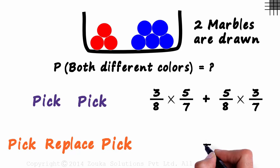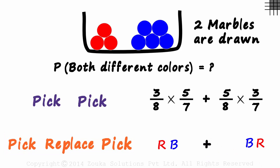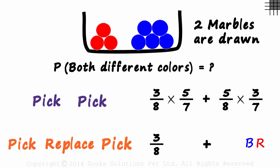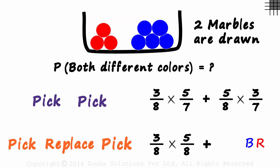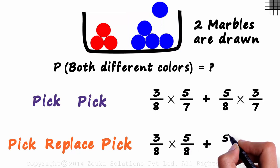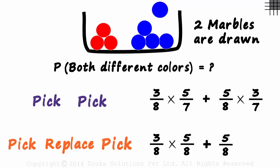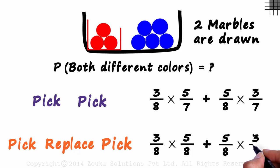For the second case with replacement, there are again two sub-cases: red then blue, or blue then red. The probability of picking a red marble first is 3 over 8, and it is put back into the box, so the probability of picking a blue marble next is 5 over 8. The probability of picking a blue marble first is 5 over 8, and after putting it back, the probability of picking a red marble is 3 over 8.